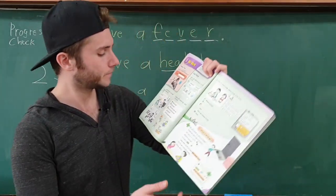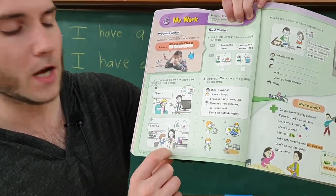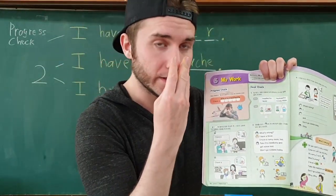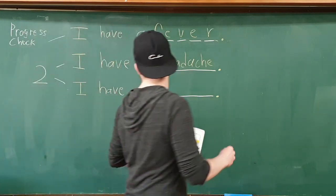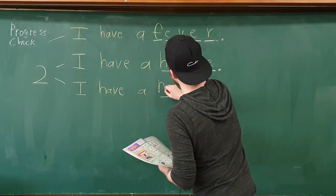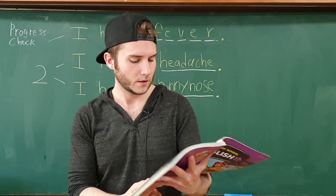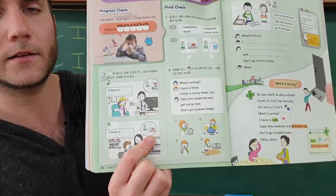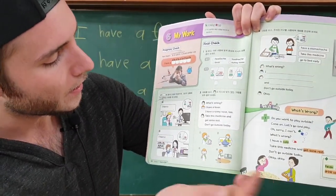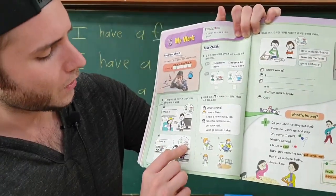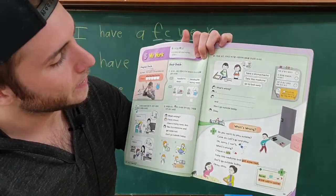Next, part two — we have a boy saying 'I have a blank' to the doctor. He's got a tissue and he's sneezing, so he's saying 'I have a runny nose.' What do you think the doctor is saying in this one? There's medicine, so I think she's saying 'take this medicine,' and there's a picture of a couch, so 'take this medicine and get some rest.'